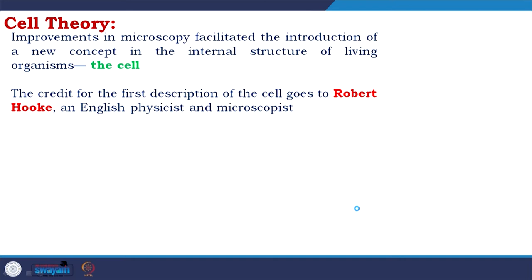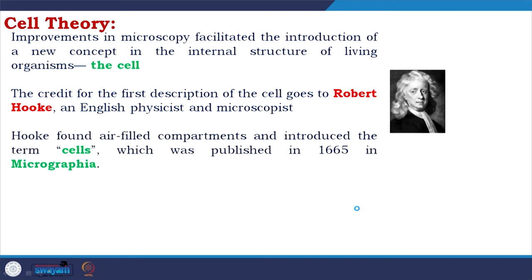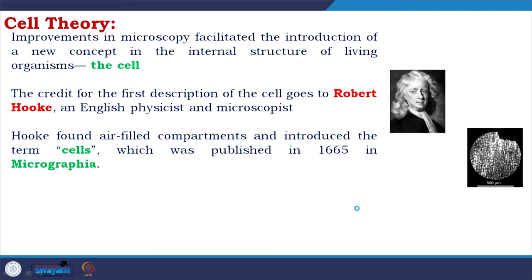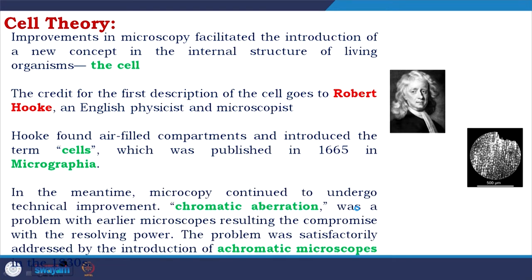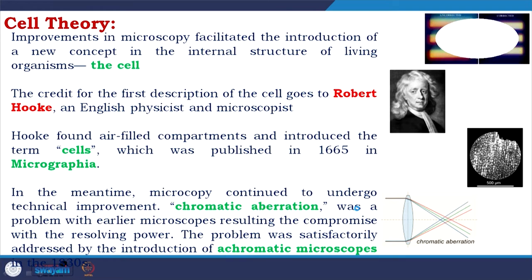The credit for the first description of the cell goes to Robert Hooke, an English physicist and microscopist. Hooke found air-filled compartments and introduced the term 'cell,' published in 1665 in Micrographia. In the meantime, microscopy continued to undergo technical improvement. Chromatic aberration was something that created problems with earlier microscopes, compromising the resolution, and the problem was satisfactorily addressed by the introduction of achromatic microscopes.